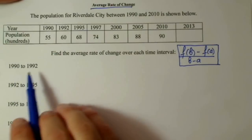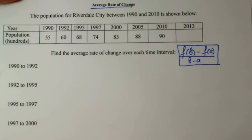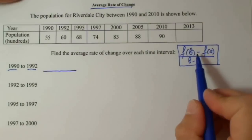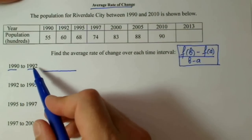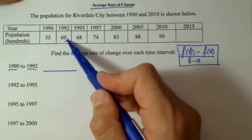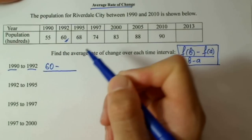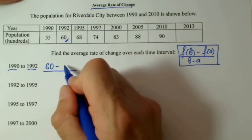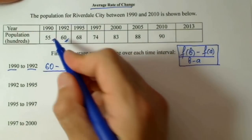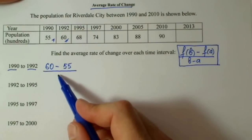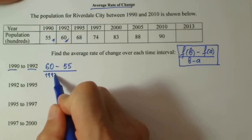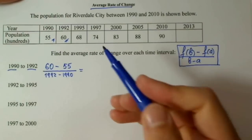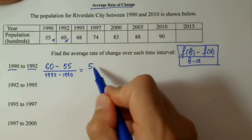Let's take some examples. First example: we have to calculate the average rate of change over the time interval 1990 to 1992. Starting with the basic formula — change in output: 1992 is 60, minus 1990 which is 55, from the table. Over change in input: 1992 minus 1990. That gives us 5 over 2, which equals 2.5.